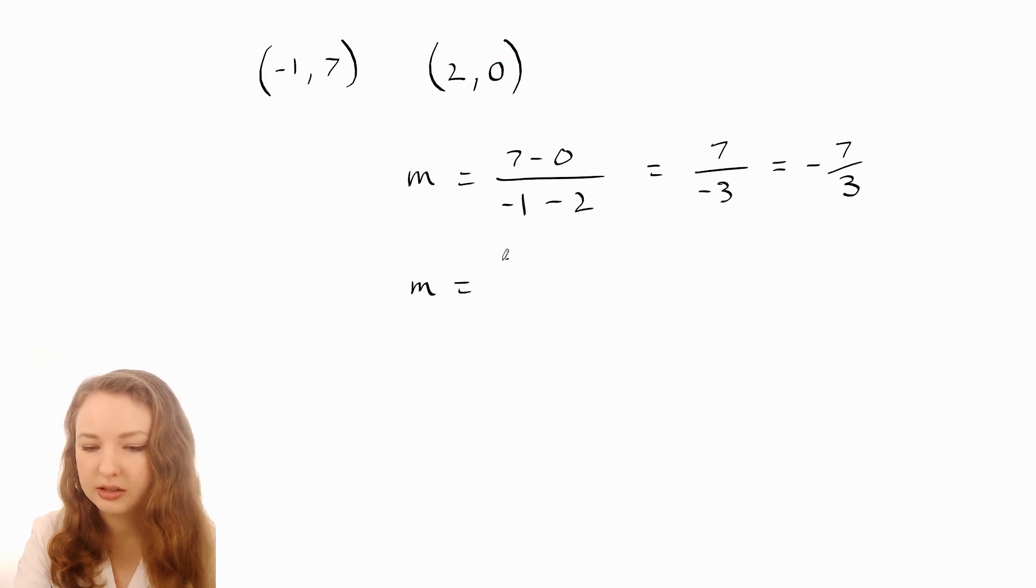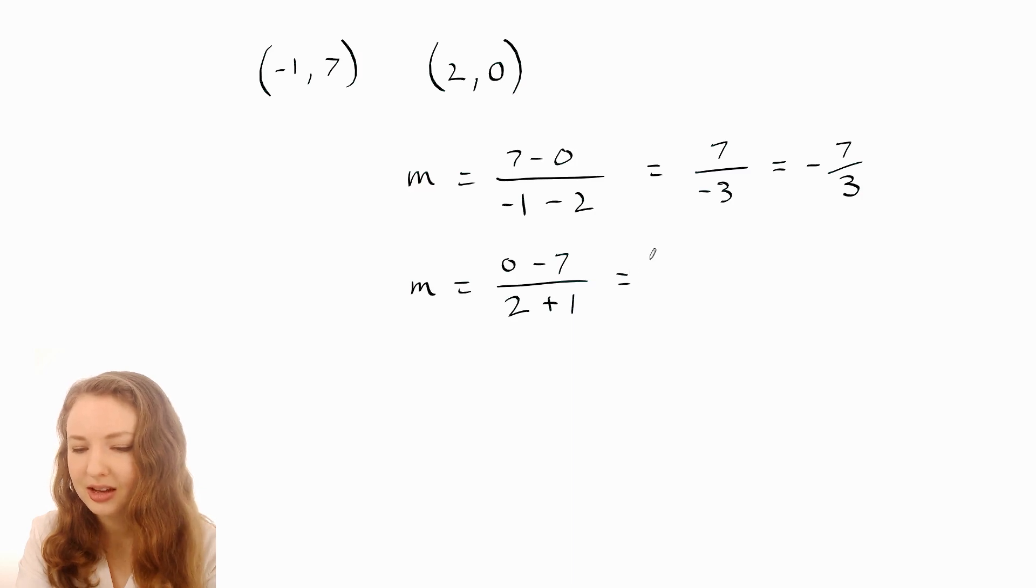Alternatively, you could have said zero minus seven over two minus negative one, which is plus one. That gives us negative seven over three, and then again we just need to pull the negative out the front. And that's it.